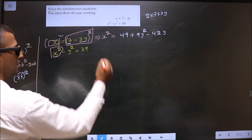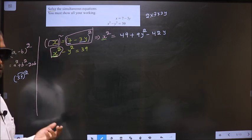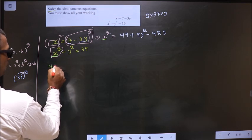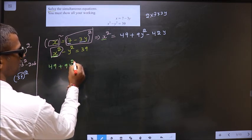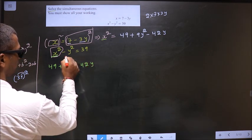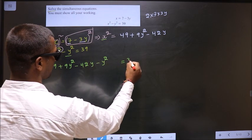Now, this x square, I replace it here. Let us replace. In place of x square, it is 49 plus 9y square minus 42y. This minus y square here I write equal to 39.